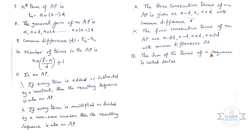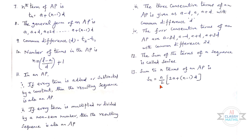The sum of the terms of a sequence is called a series. Thirteenth one: Sum to n terms of an AP is Sn = (n/2)(2a + (n − 1)d). Use this formula accordingly.